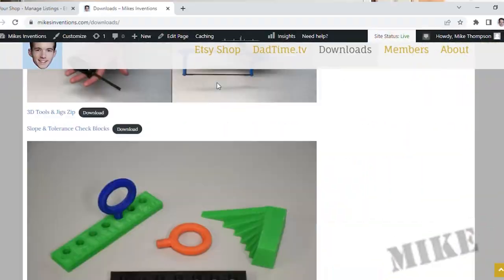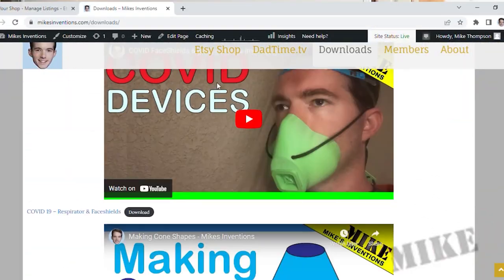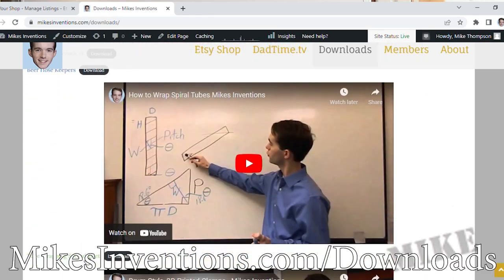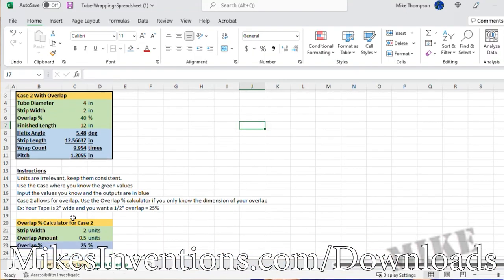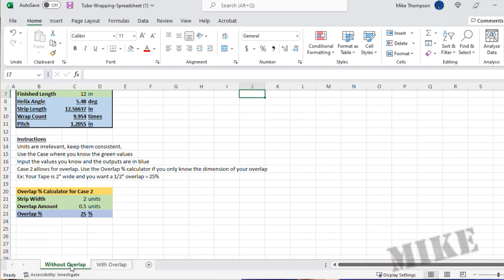Now if you want to skip all this and just want to do it, go download the spreadsheet. I've updated it now to include a section for overlap, but for those of you that are curious and have asked for how you do it with the math, I'm about to show you this.